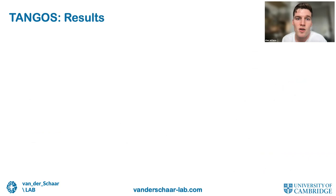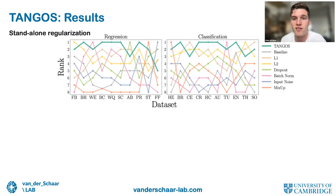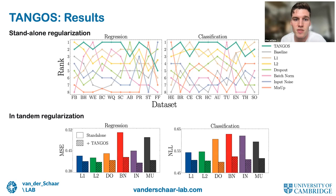Each term is weighted by its own hyperparameter scalar, similar to weight decay. The penalty is applied at batch level with a subsampling scheme applied to the orthogonalization term due to exponential growth in possible pairings of neurons as the latent dimension grows. We evaluate TANGOS across 20 tabular datasets split evenly between regression and classification tasks.